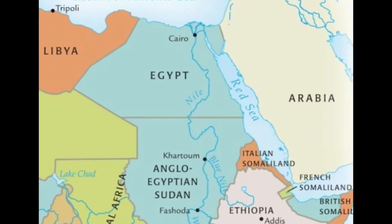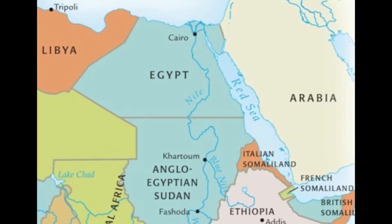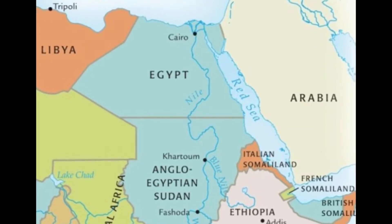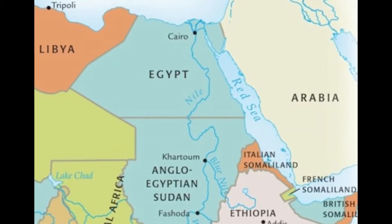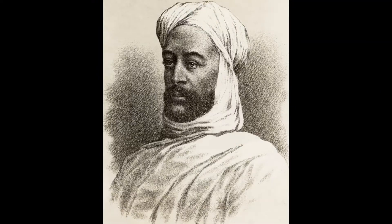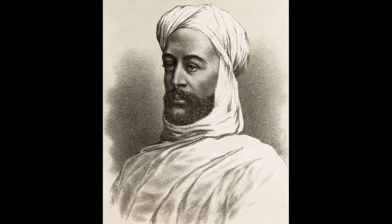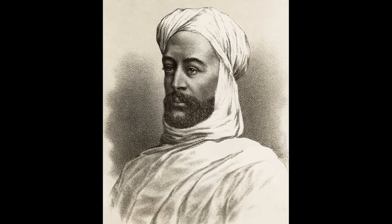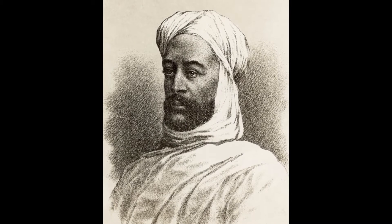Let me begin with a story — a story that combines modernization, reform, resistance, and imperialism. Let me take you back to the 1870s, to Egypt and Sudan, where a Muslim cleric named Muhammad Ahmad was attracting a large following, referring to himself as the Mahdi, an Arabic word meaning 'the guided one.'